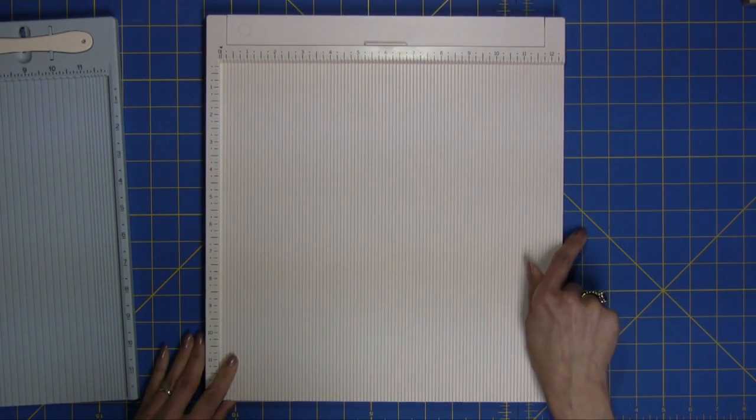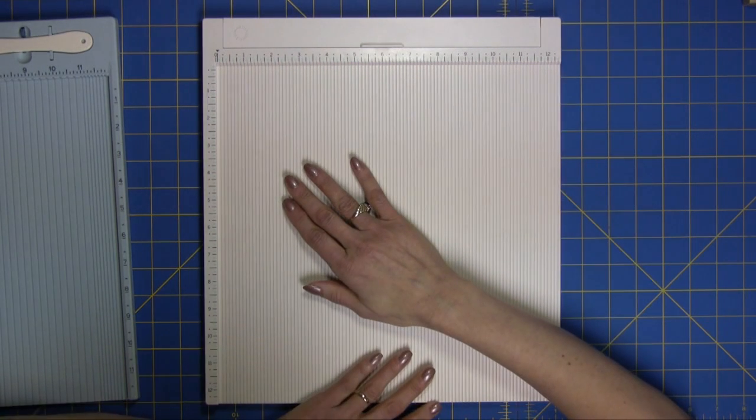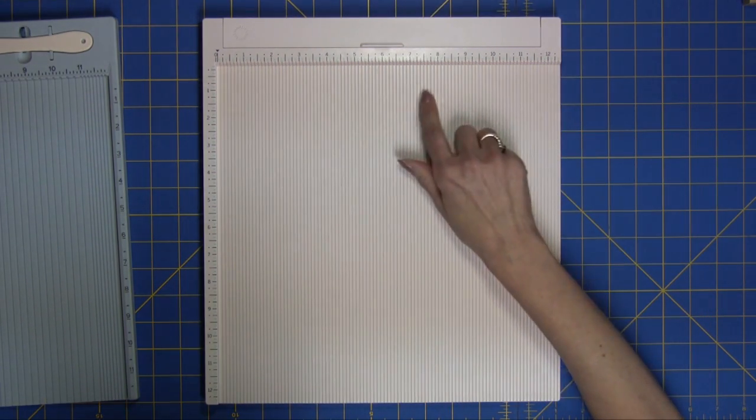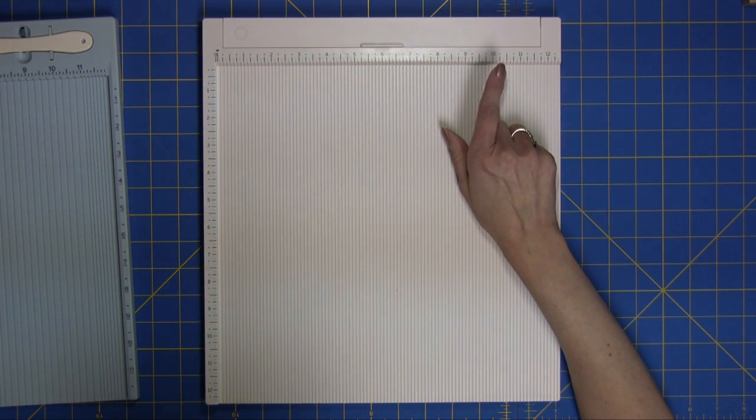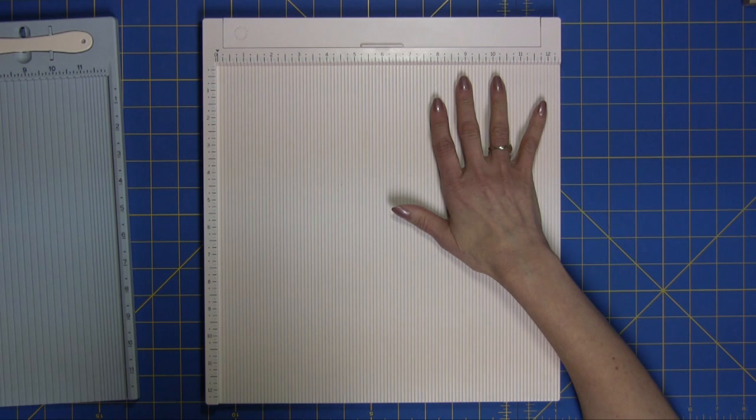And this is the Martha Stewart scoreboard. And I want to talk about some of the advantages with the Martha Stewart scoreboard. You have score lines every eighth of an inch. And as I've said in my other videos, sometimes that's a love hate relationship.